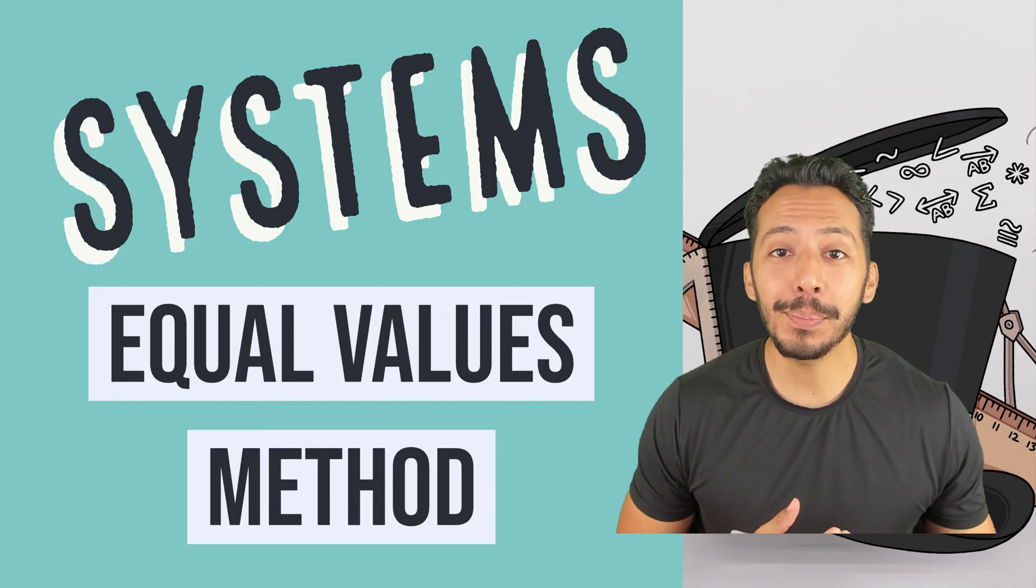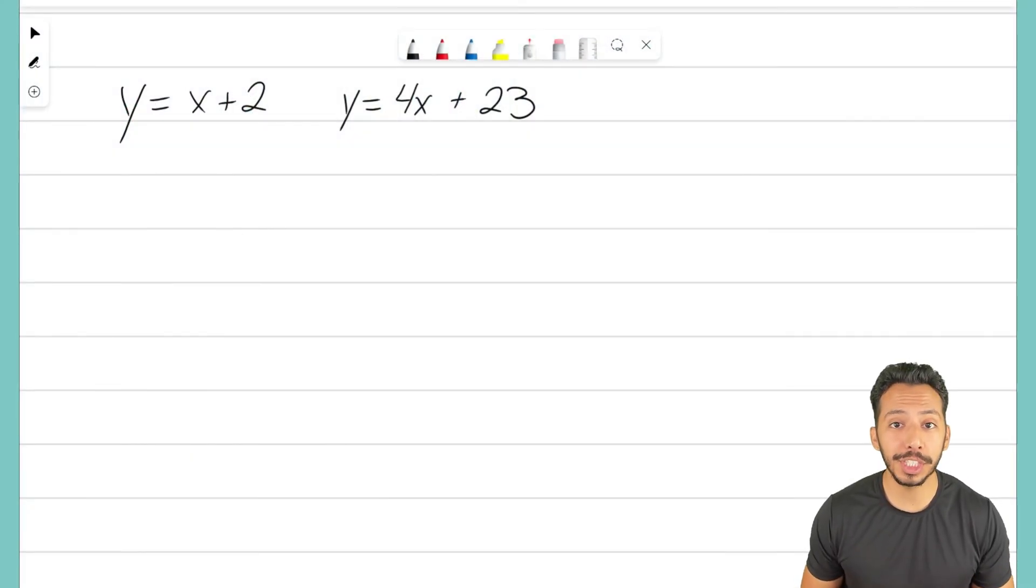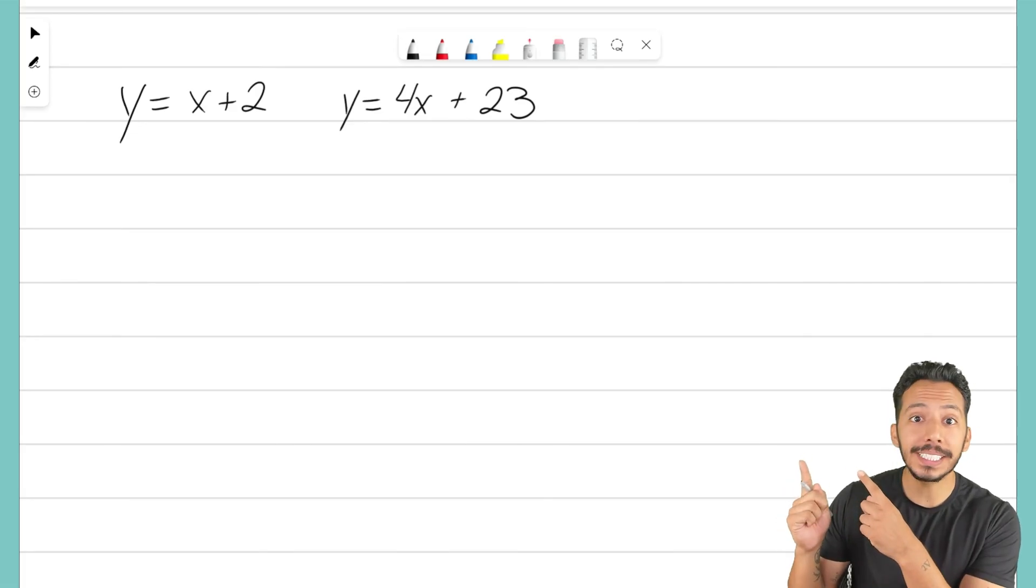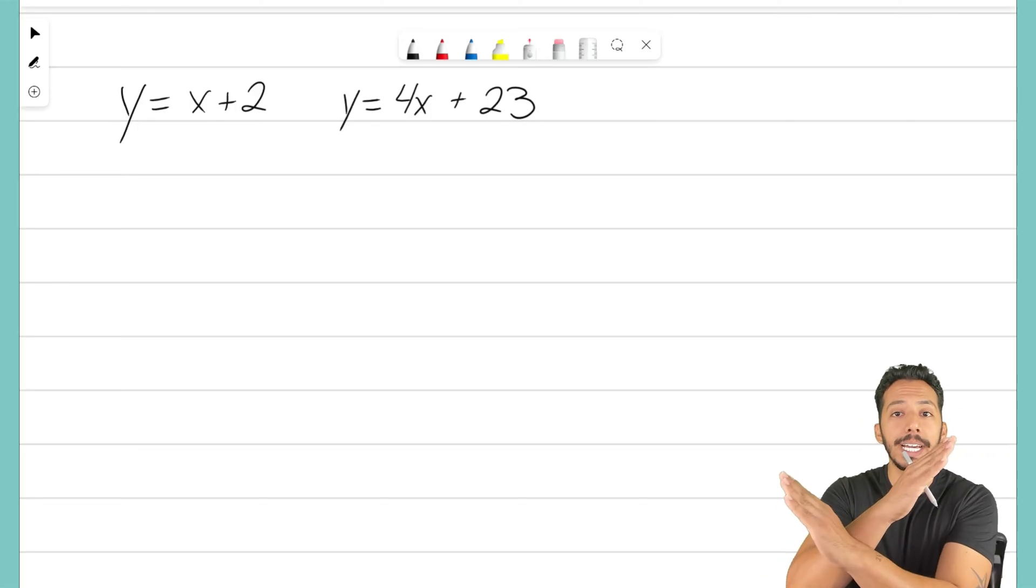So let's jump right into an example problem and see how we can use this method to solve for a solution to a system. And there's my system right there. I have two equations. The first is y equals x plus 2. The second is y equals 4x plus 23. These are both lines, and we're trying to determine where those lines intersect.